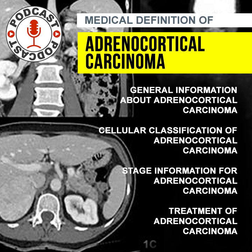Biochemical assessment aims to detect increased levels of cortisol — via 24-hour urine and 1 mg dexamethasone suppression test — serum adrenocorticotropic hormone and cortisol, androgens such as dehydroepiandrosterone sulfate and testosterone, estrogens such as estradiol, and mineralocorticoids including renin and aldosterone.